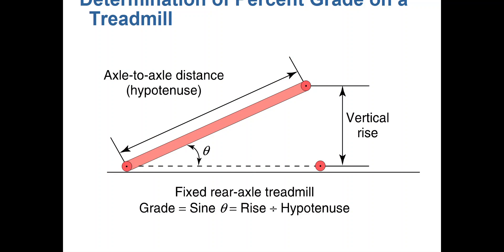Most treadmills simply display the grade when you increase the incline. But if you wanted to calculate grade yourself, you would take the angle of the incline — the rise divided by the hypotenuse — and that gives you the treadmill grade. We often have to calculate the vertical rise to understand exactly how much work a person is performing on the treadmill, and we do so by taking the rise of the treadmill from apex to ground and dividing by the hypotenuse.